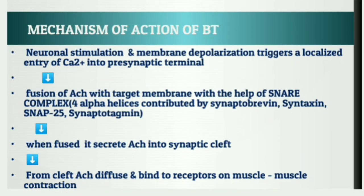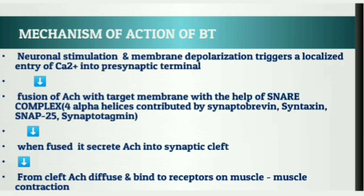Let's move on to the mechanism of action of botulinum toxin. The presynaptic nerve endings contain membranous vesicles which hold neurotransmitters like acetylcholine. Neuronal stimulation and membrane depolarization trigger a localized entry of calcium ions. This calcium ion influx initiates a chain of signaling events that drives the fusion of vesicles with the target membrane — a process facilitated by the SNARE complex. This core SNARE complex is formed by four alpha helices contributed by synaptobrevin, syntaxin, SNAP-25, and synaptotagmin, which serves as a calcium sensor and closely regulates SNARE zipping. The primary role of SNARE proteins is to mediate vesicle fusion with the target membrane.